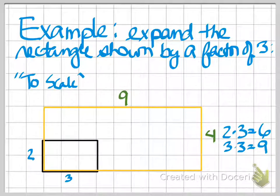So 3 times 3 equals 9. That's going to make this line 9 units long. 2 times 3 equals 6.